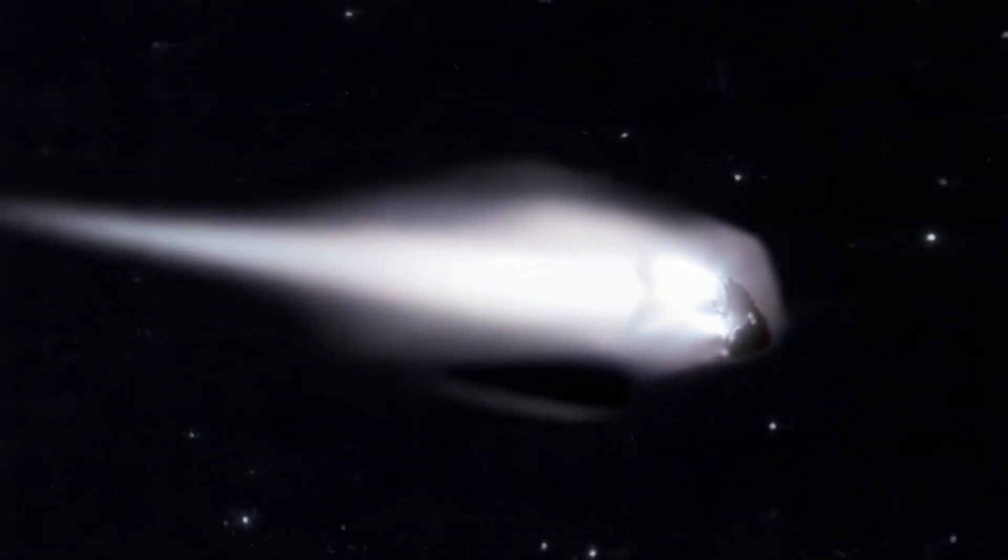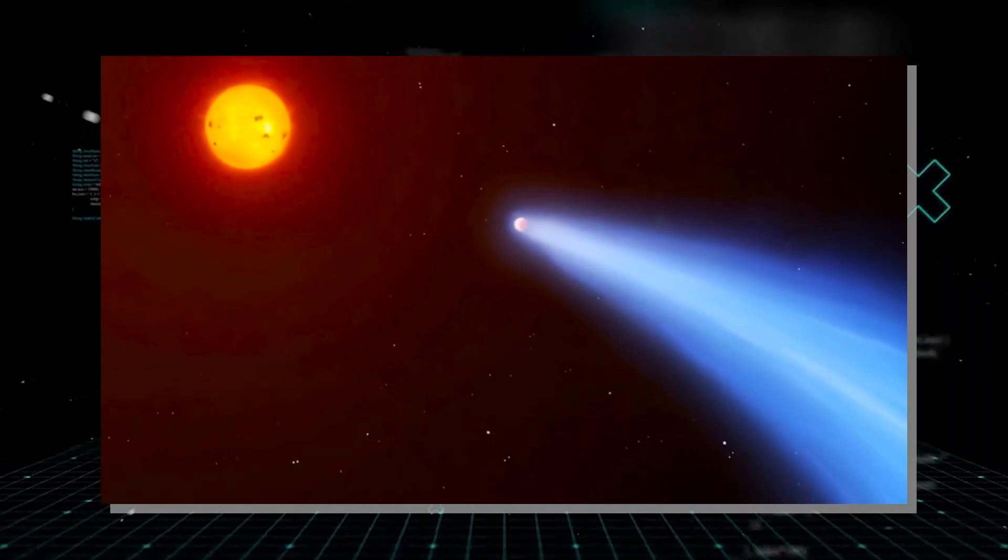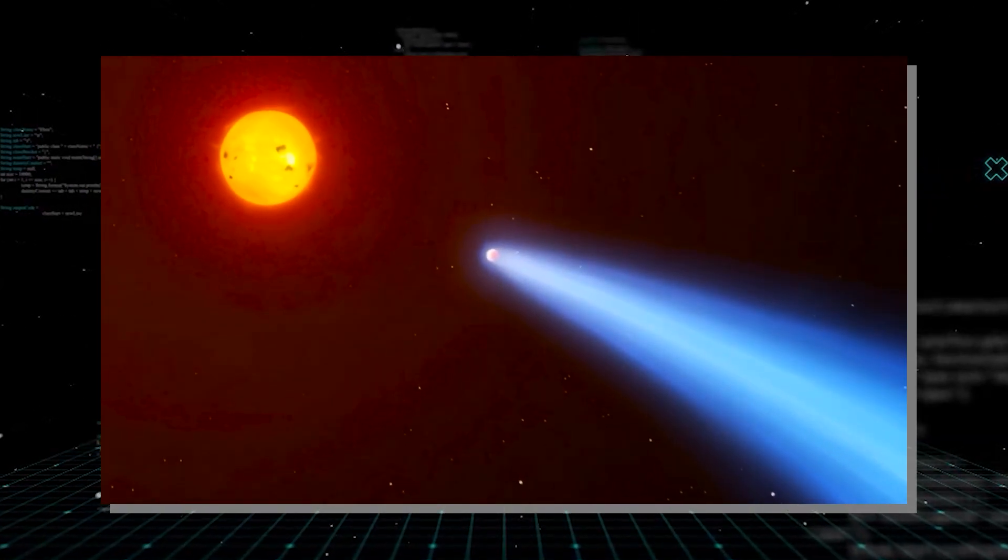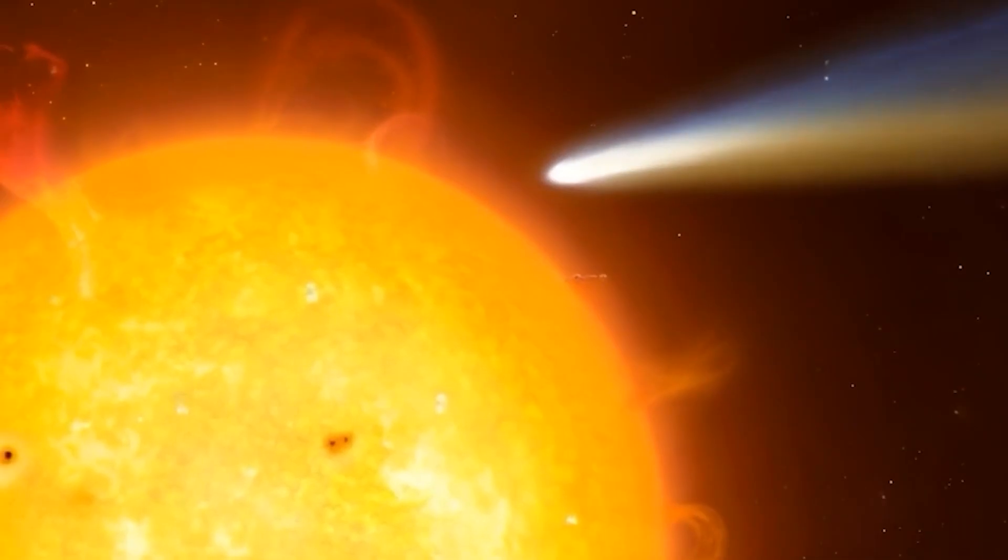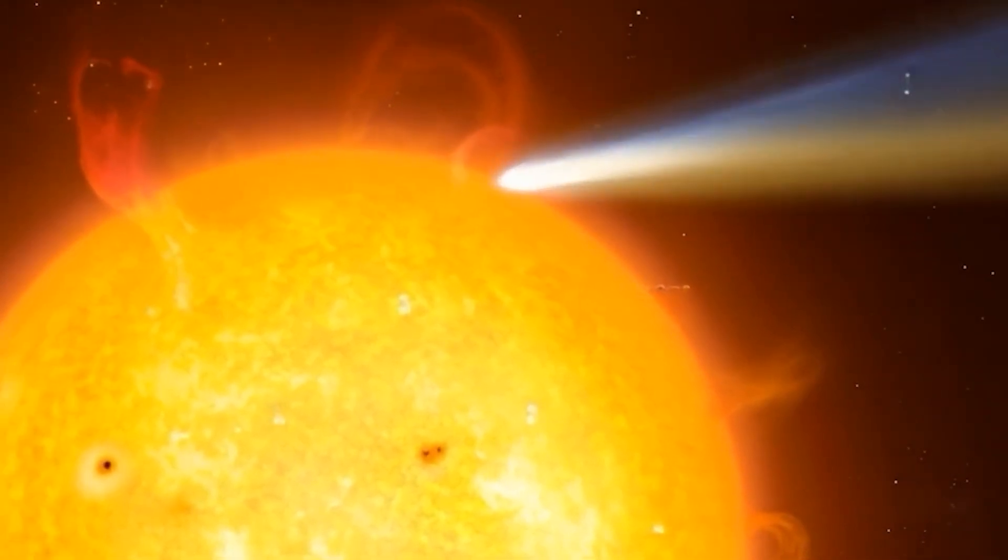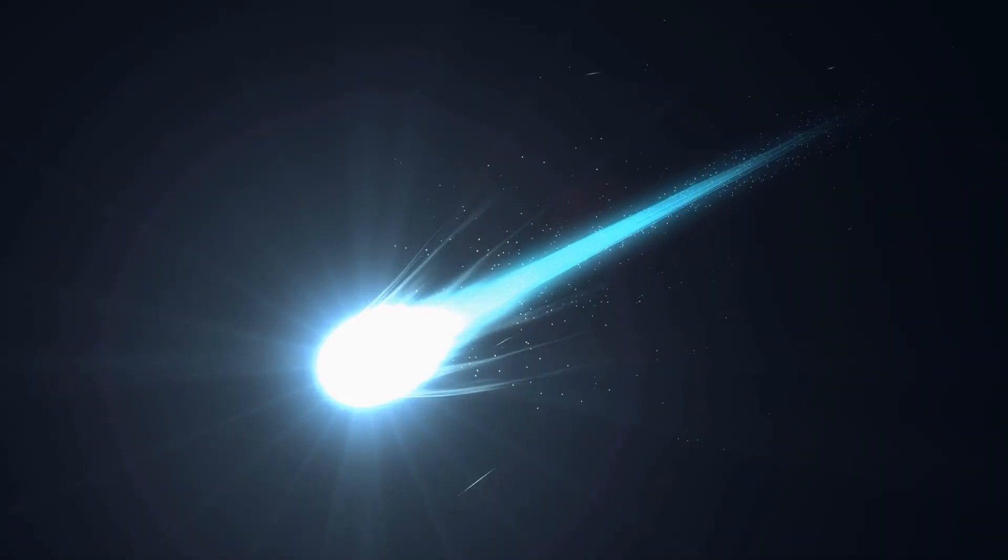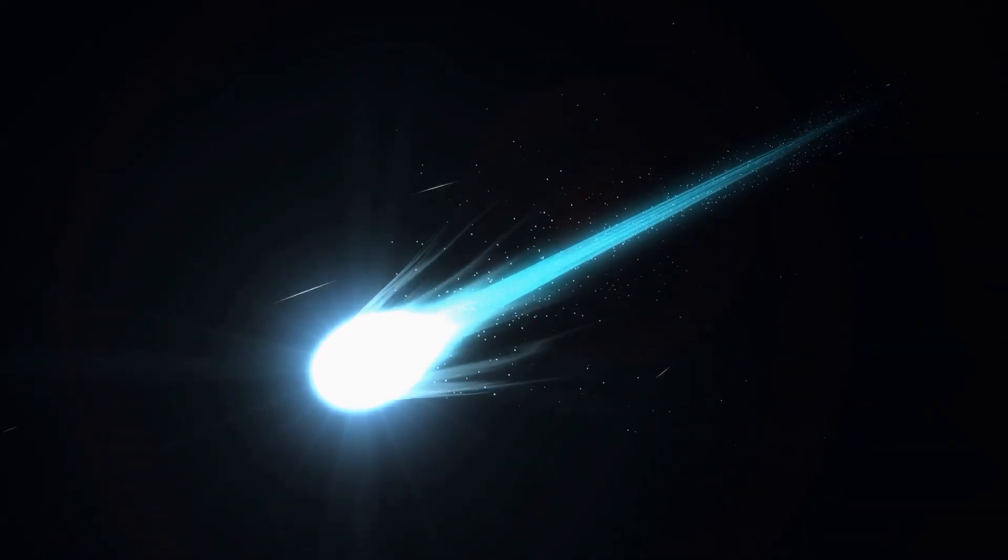Comets are essentially dirty snowballs, and as they approach the Sun, their icy components heat up and vaporize, releasing gas and dust. This process, known as outgassing, forms the comet's glowing coma and tail.